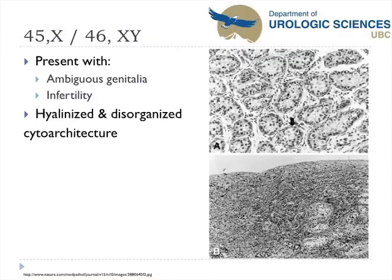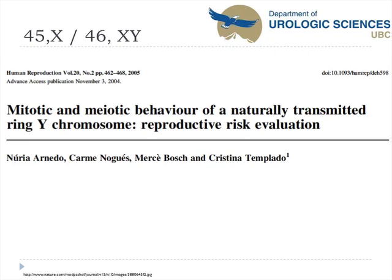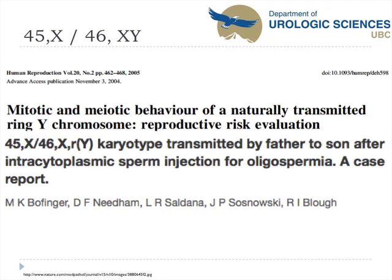Mixed gonadal dysgenesis — these individuals often present with ambiguous genitalia at birth, or more subtly, with infertility later in life. Histopathologically they often have hyalinized and disorganized cytoarchitecture. There have been only about four case reports of successful fertilization, and these often result in genetic abnormalities in the offspring, including a ring Y chromosome or Klinefelter's genotype being passed forward.